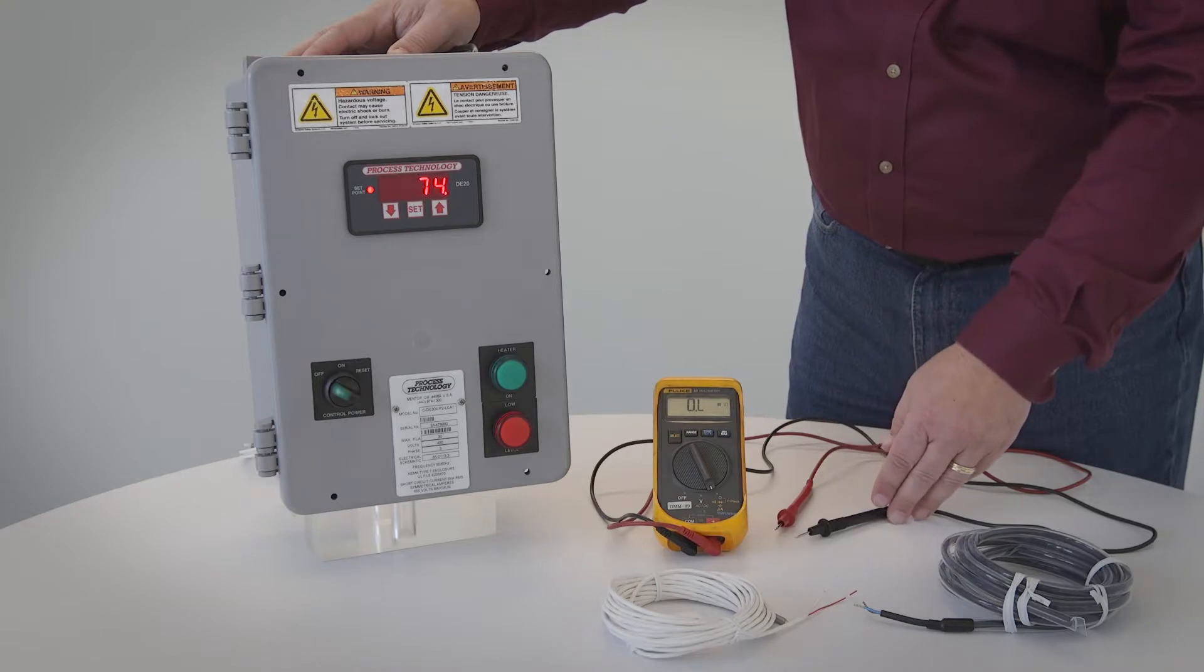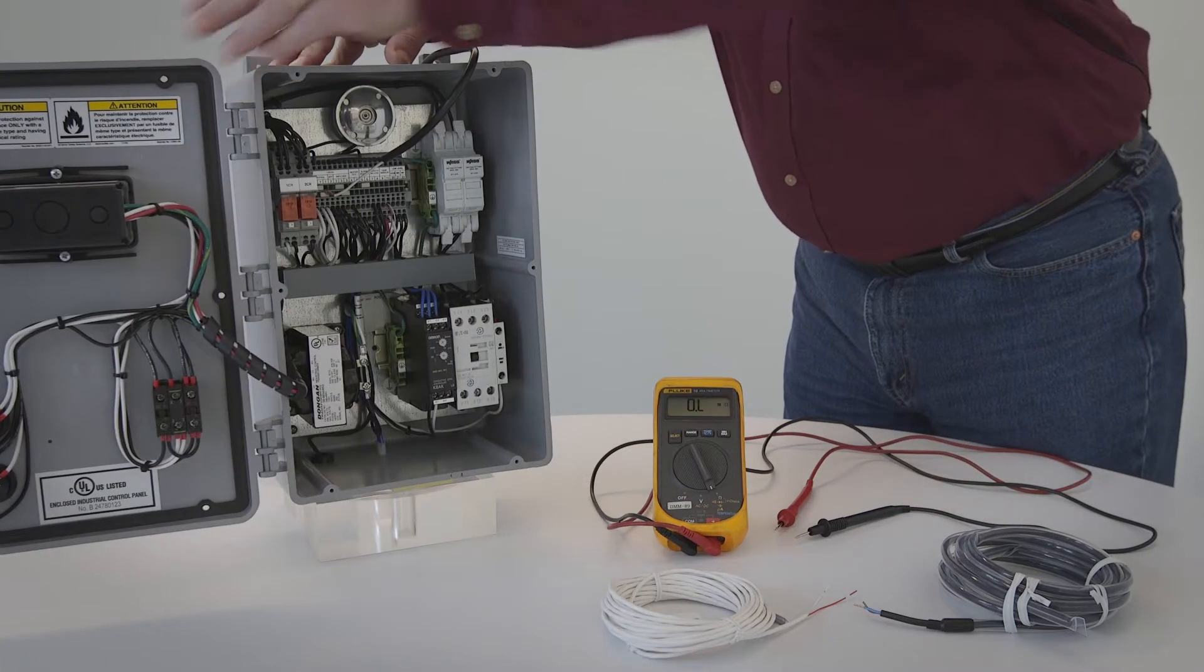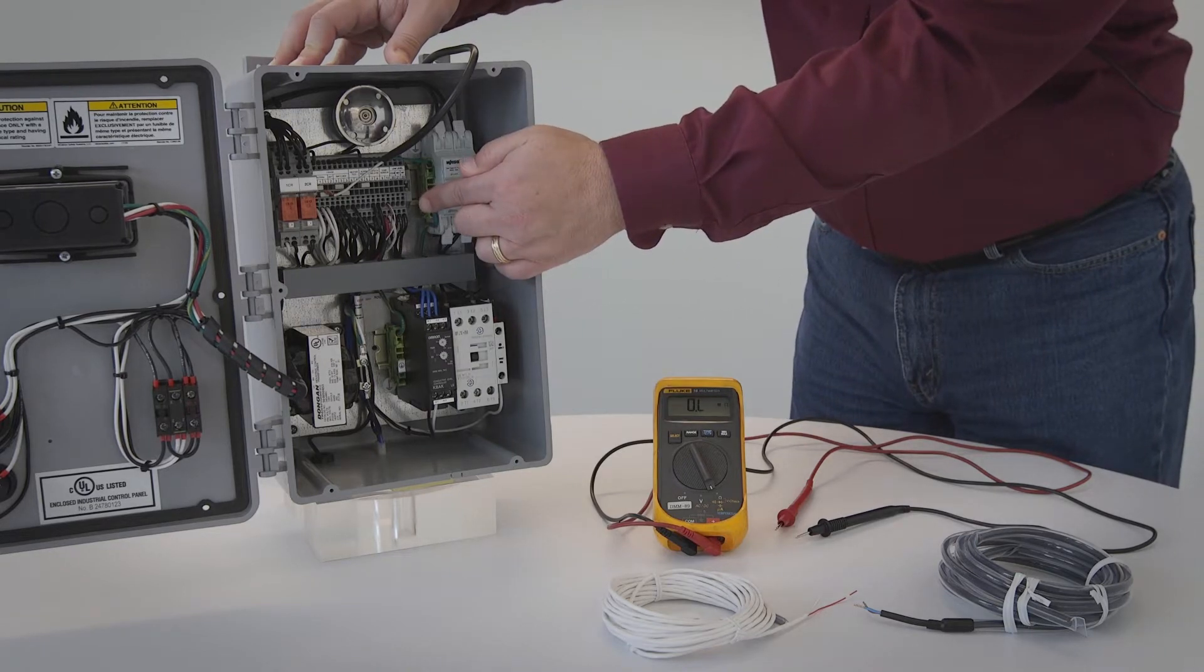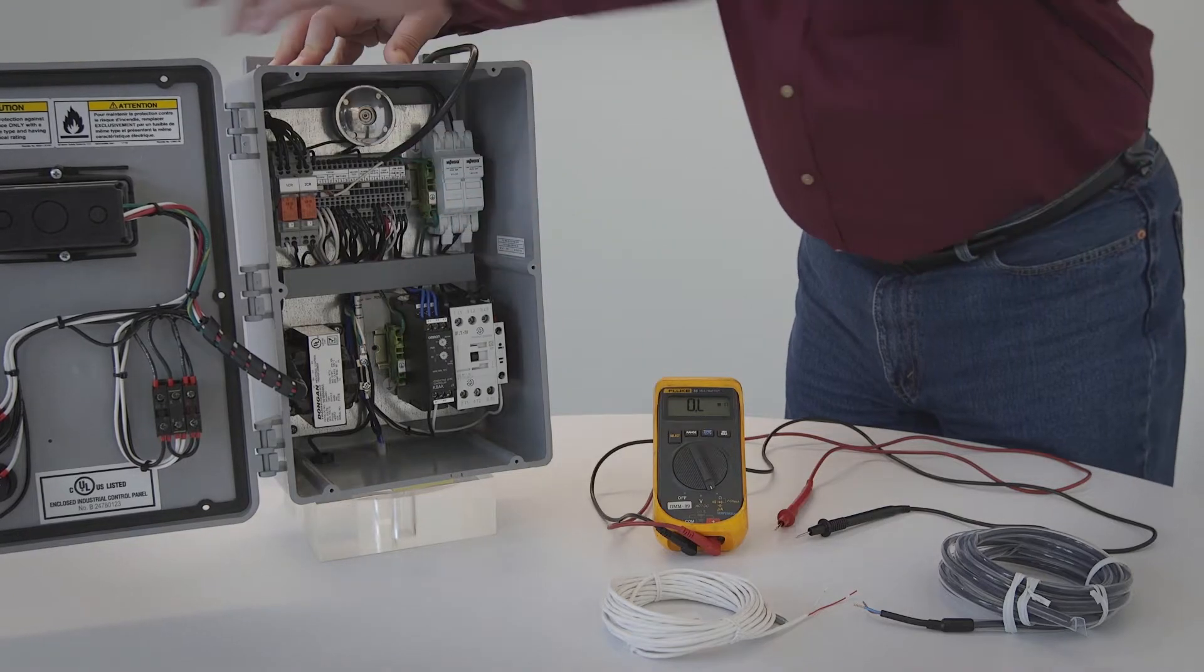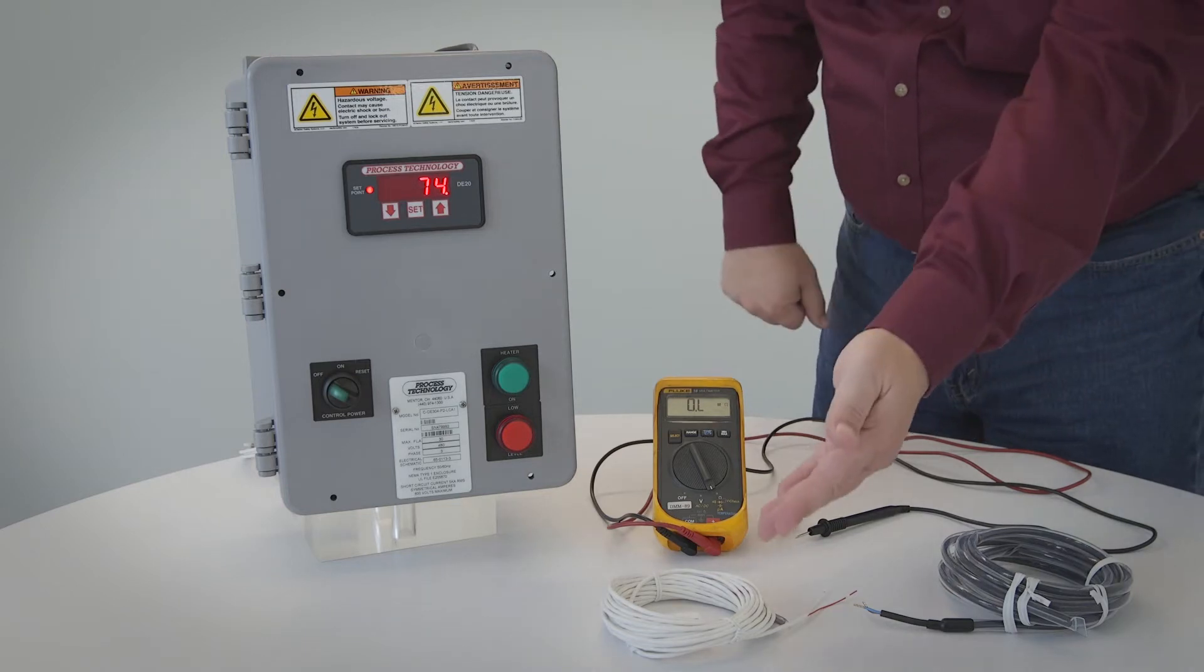Trace the temperature sensor and note where the wires are connected to the control box. Then disconnect the sensor and use the electrical meter to measure the sensor resistance.